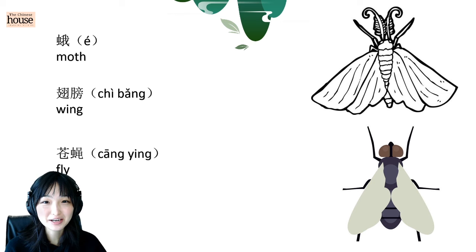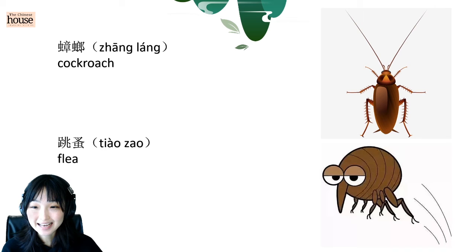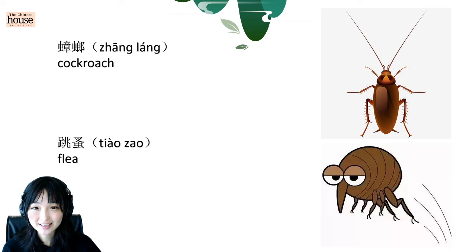Fly. 苍蚁蚁. 蚁蚁. Good. Next one. Cockroach. 蚁蚂. 蚁蚁. Flea. 跳走. 跳走. Read after me. 跳走. Good.